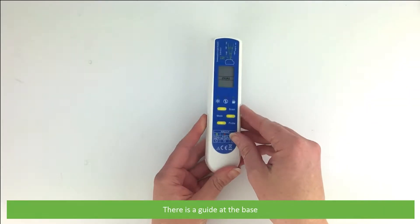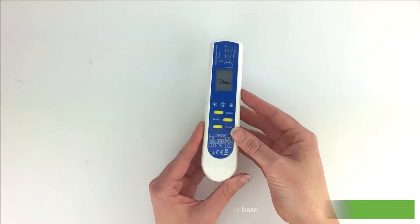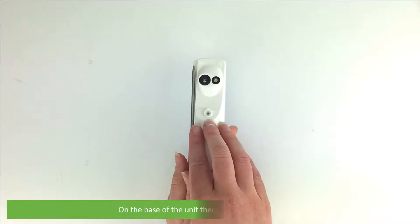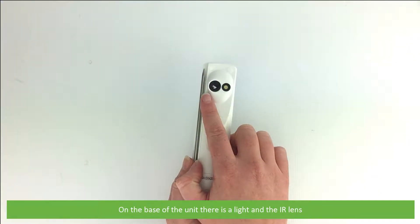There is a guide at the base. On the base of the unit there is a light plus the IR lens.